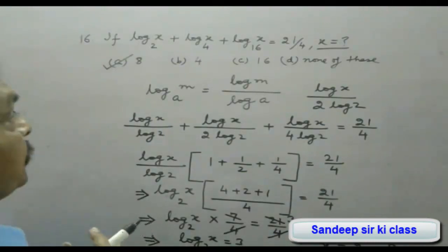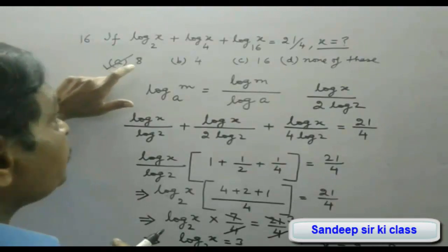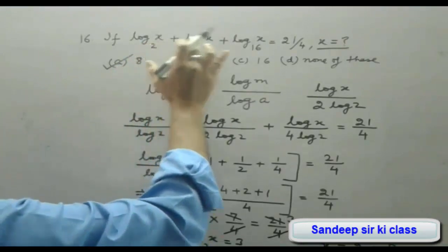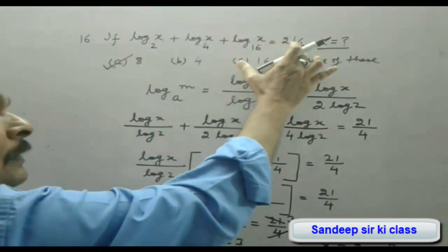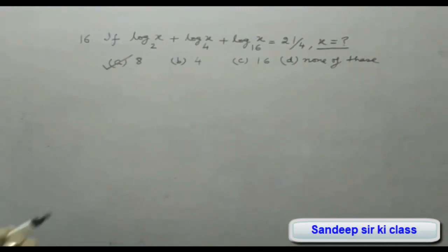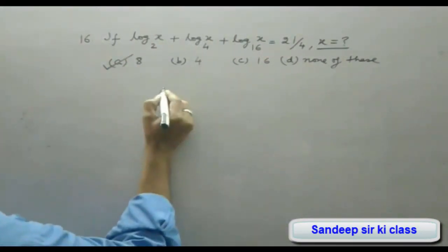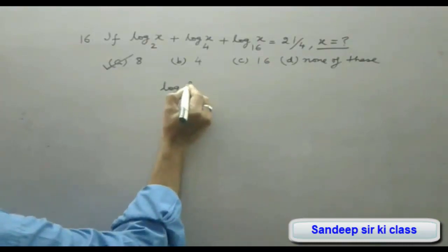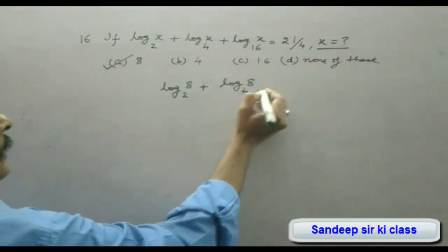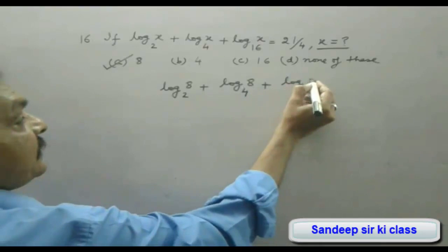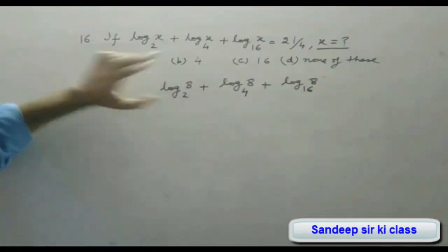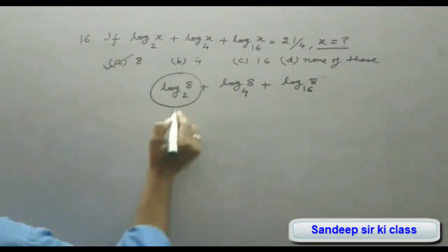We start verification with option A, substituting x = 8. The first term becomes log 8 to the base 2, the second term log 8 to the base 4, and the third term log 8 to the base 16. The sum should equal 21/4.